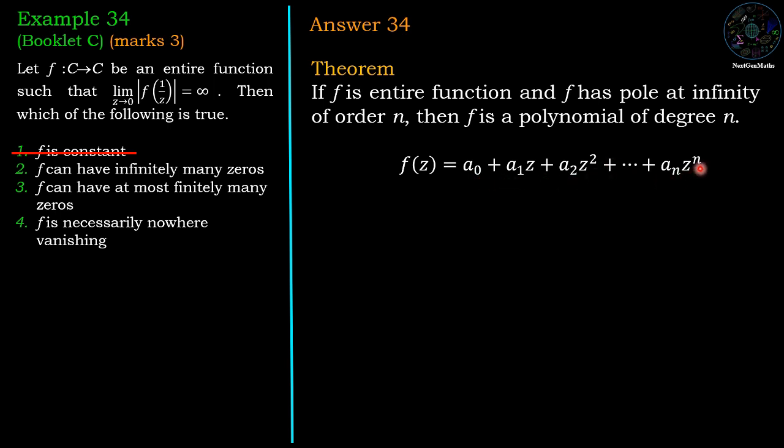Now in our case, the given function is entire as well as has pole at infinity, therefore it should be polynomial. And if it is polynomial, then zeros of the polynomial means f(z) = 0. z such that f(z) = 0 will give the zeros of the function. Now polynomial equal to 0 - this equation has at most n zeros or n distinct zeros.